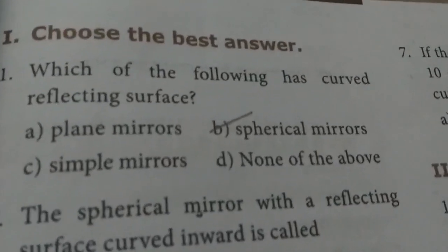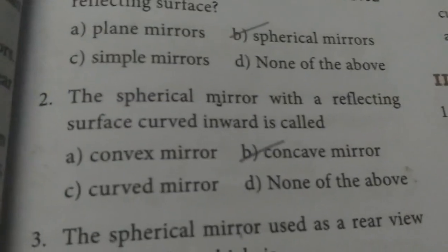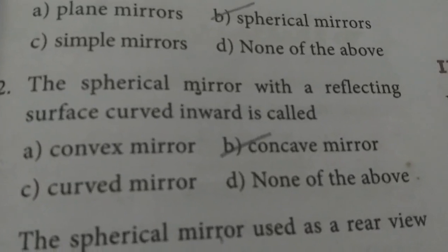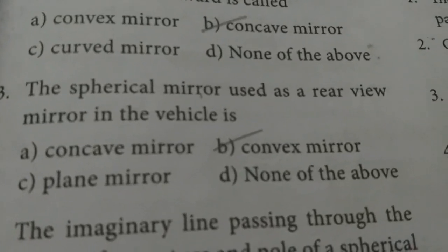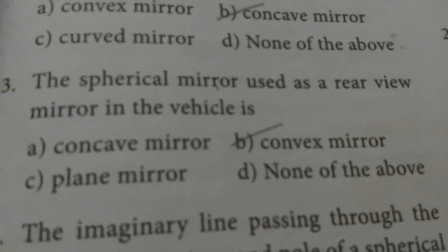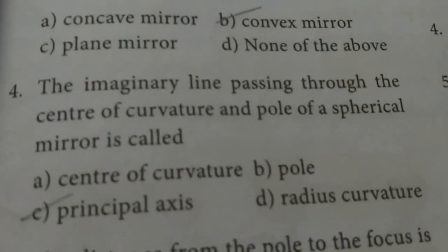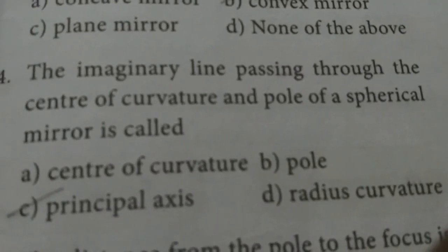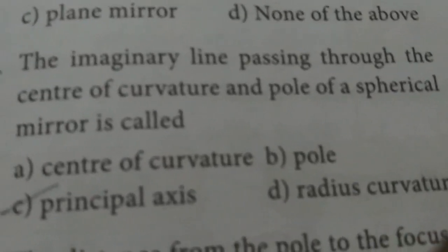Choose the best answer. Question 1: which of the following has a curved reflecting surface? Answer is B — spherical mirrors. Question 2: the spherical mirror with a reflecting surface curved inward is called concave mirror; curved outward is convex mirror. Question 3: the spherical mirror used as a rear view mirror in vehicles — answer is option B, convex mirror. Question 4: the imaginary line passing through the center of curvature and the pole of a spherical mirror is called the principal axis.